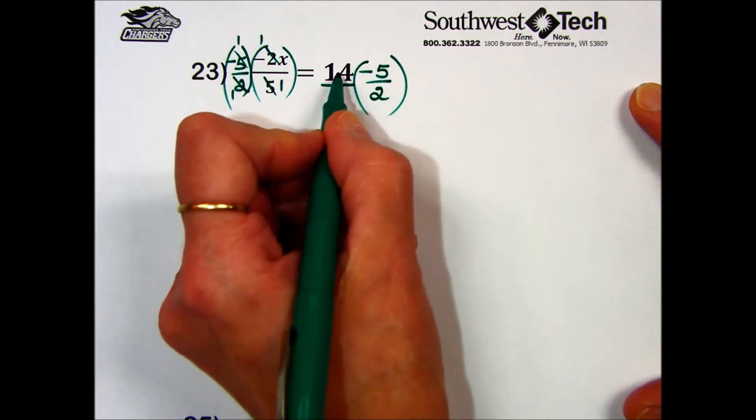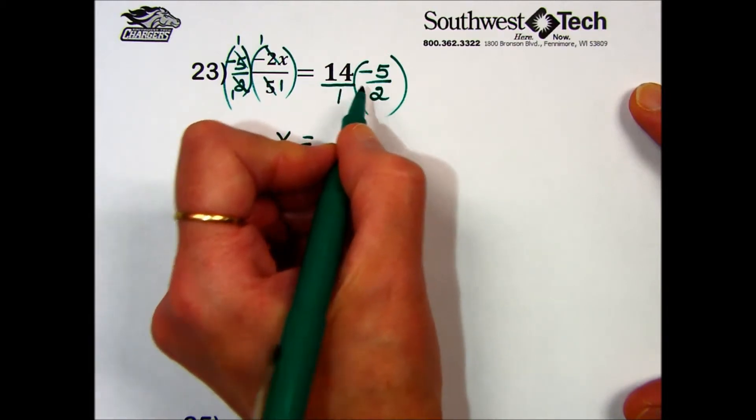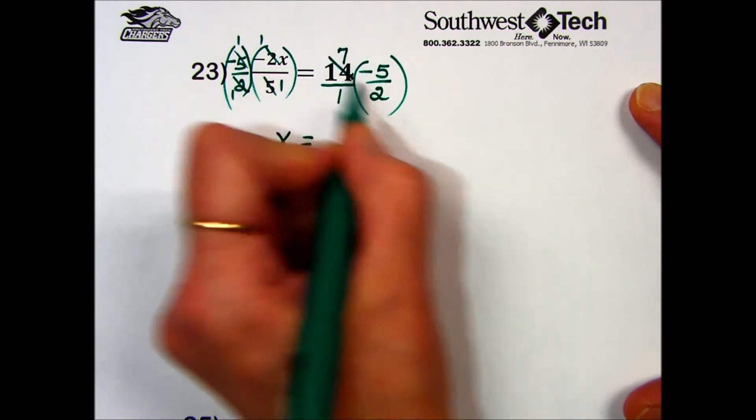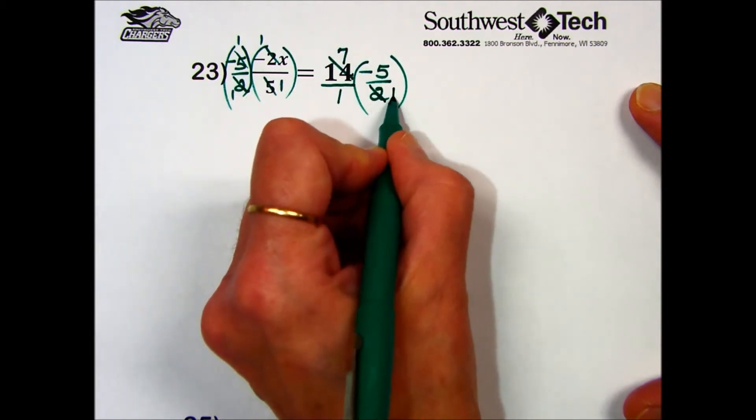In this case, 2 and 14 have a common factor of 2. 14 divided by 2 is 7. 2 divided by 2 is 1.